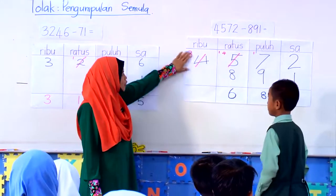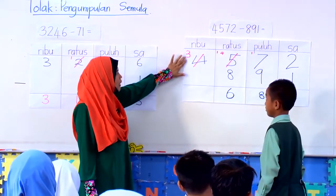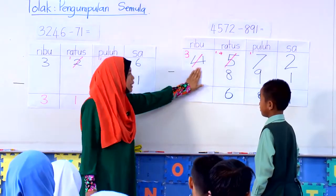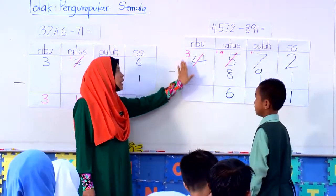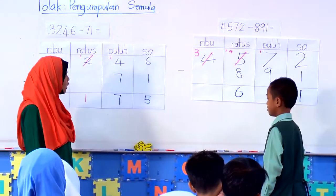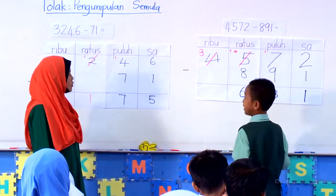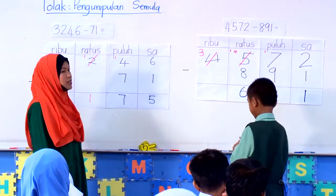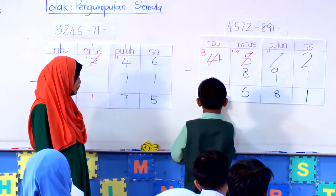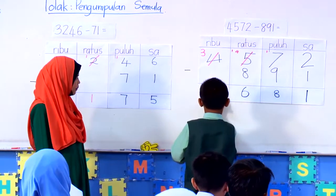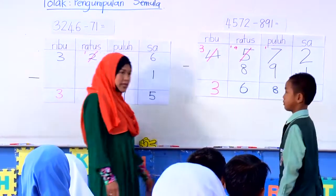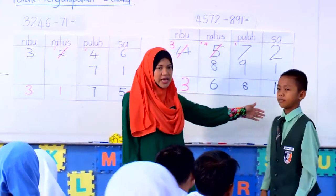Selepas tu, apa berlaku pada nilai ribu ni? Ada benda yang nak ditolak tak di bawah ni? Tak ada. Kalau tak ada, apa yang kamu perlu buat? Tulis sahaja nombor 3 di bawah. Tahniah. Terima kasih, Zuhafizi.